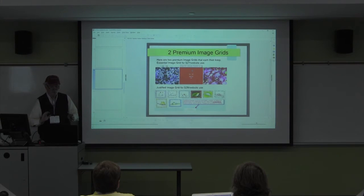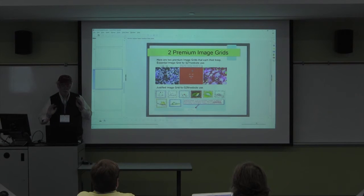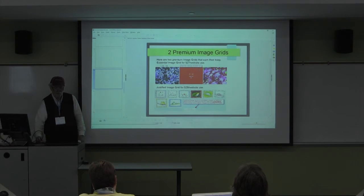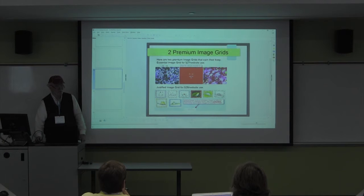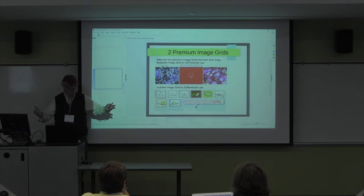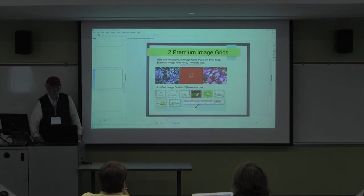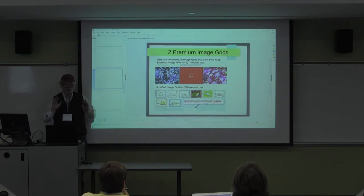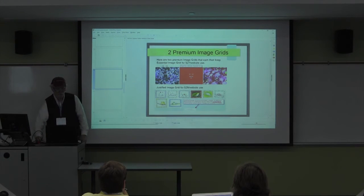Here are the two premium image grids I want to tell you about. Essential Grid — here I'm showing a series of posts in a single-row multi-post layout. If you click on any one of these images, it takes you to that post — it acts as a banner ad or carousel in effect. Justified Image Grid for $20 per website has infinite scrolling and much better management of masonry images with different sizes.